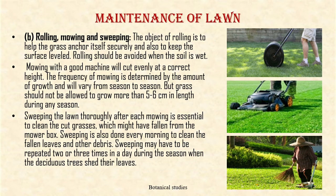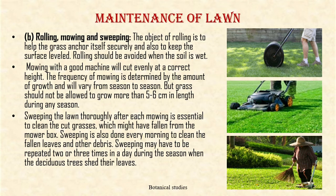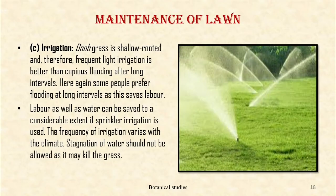Rolling, Mowing and Sweeping: The object of rolling is to help the grass anchor itself securely and also to keep the surface level. Rolling should be avoided when the soil is wet. Mowing is another important operation. The first thing is to obtain a good machine which will cut evenly at a correct height. The frequency of mowing is determined by the amount of growth and will vary from season to season, but grass should not be allowed to grow more than 5 to 6 cm in length during any season. Sweeping the lawn thoroughly after each mowing is essential to clean the cut grasses which might have fallen from the mower box. Sweeping is also done every morning to clean fallen leaves and other debris. Sweeping may have to be repeated 2 or 3 times in a day during the season when deciduous trees shed their leaves.